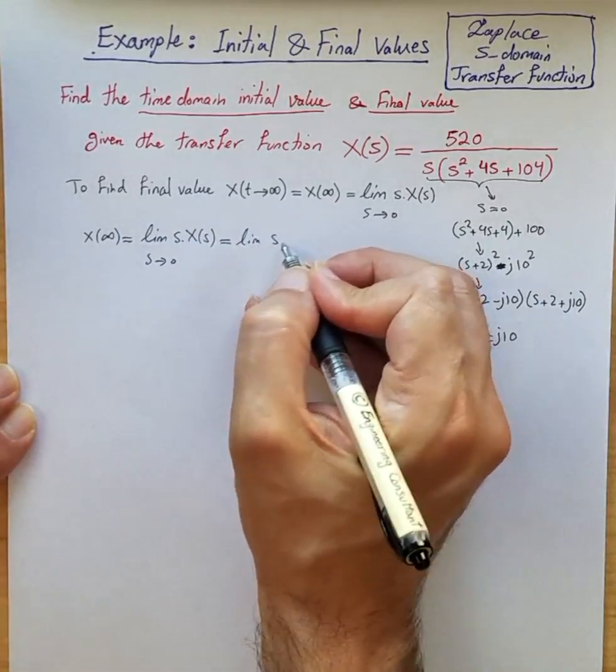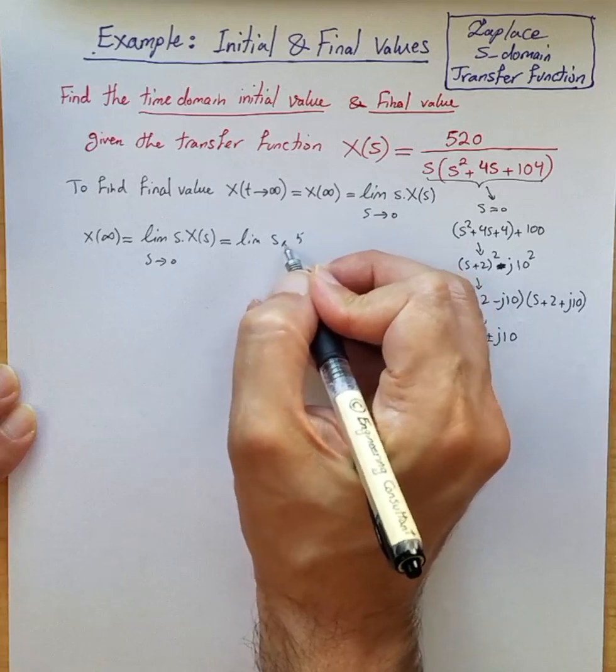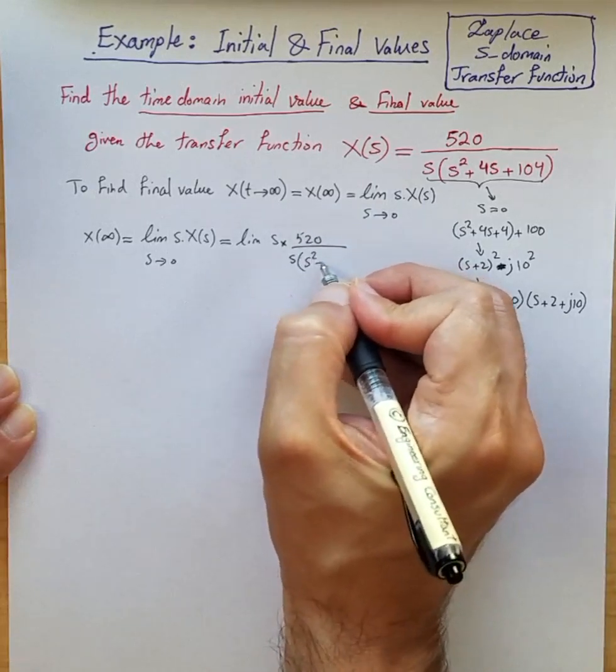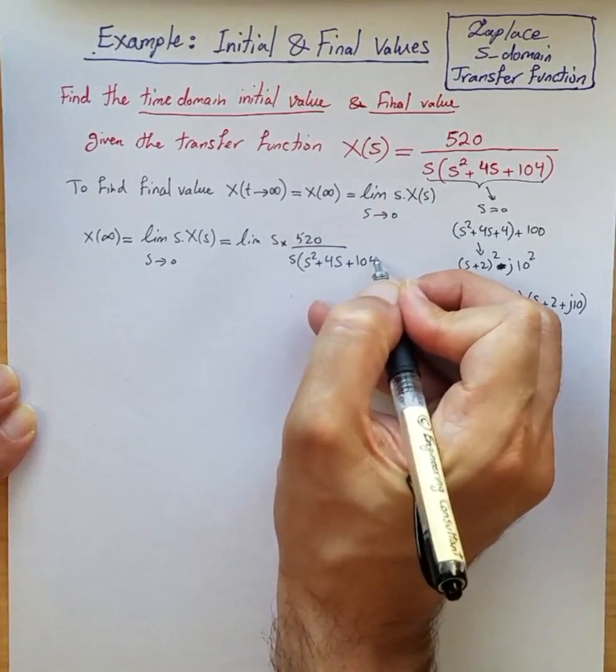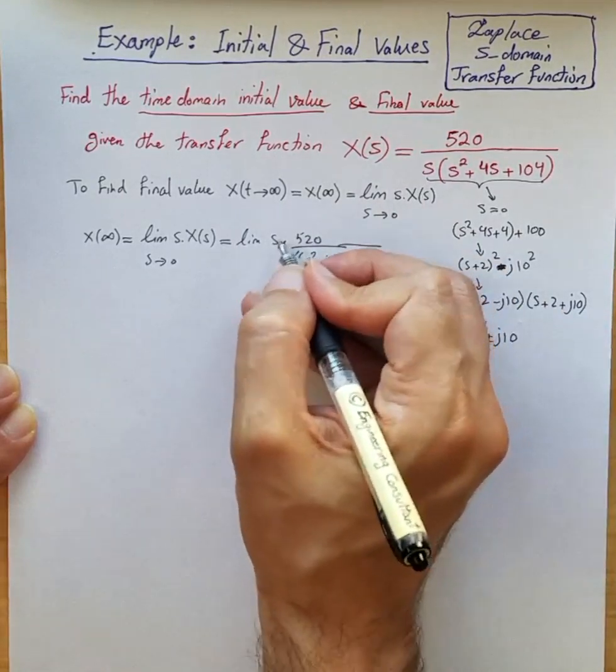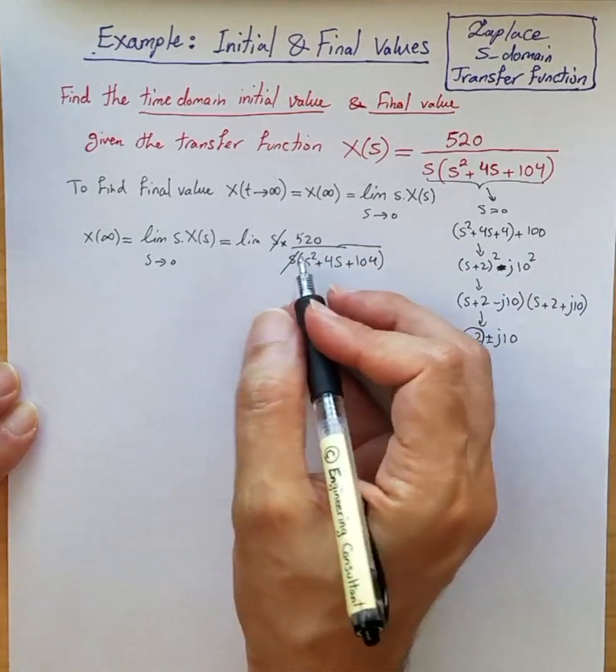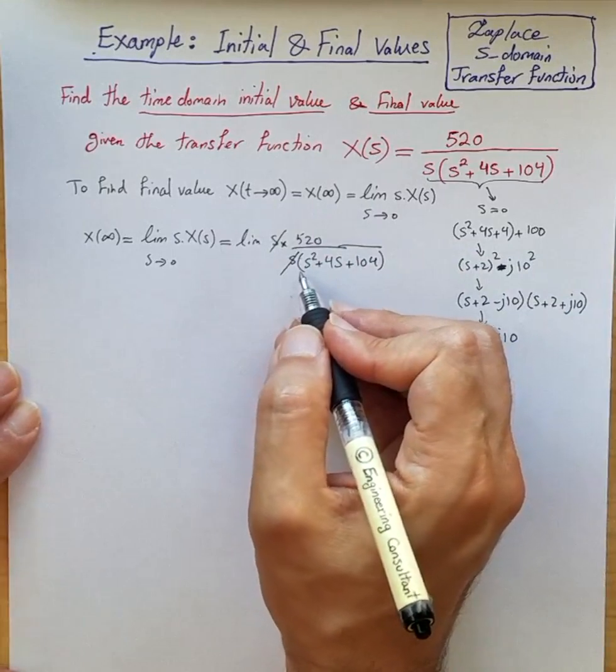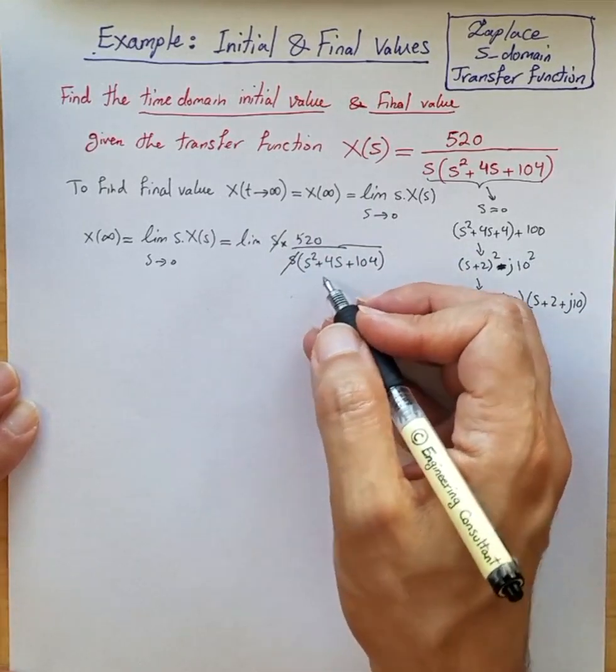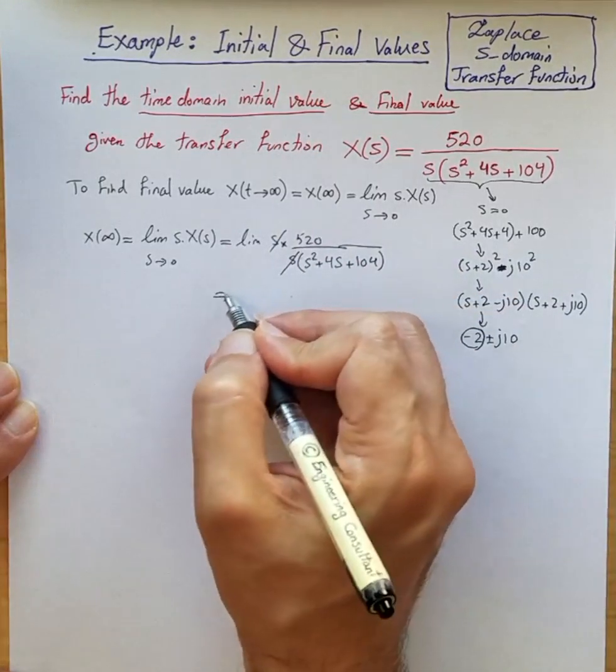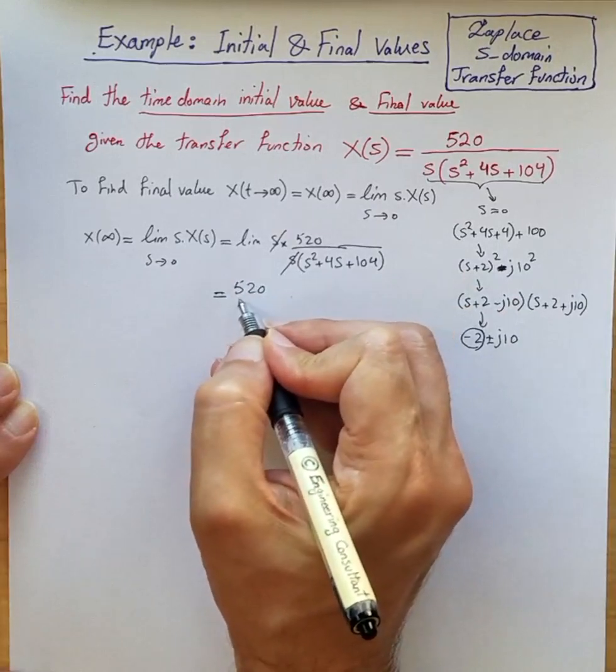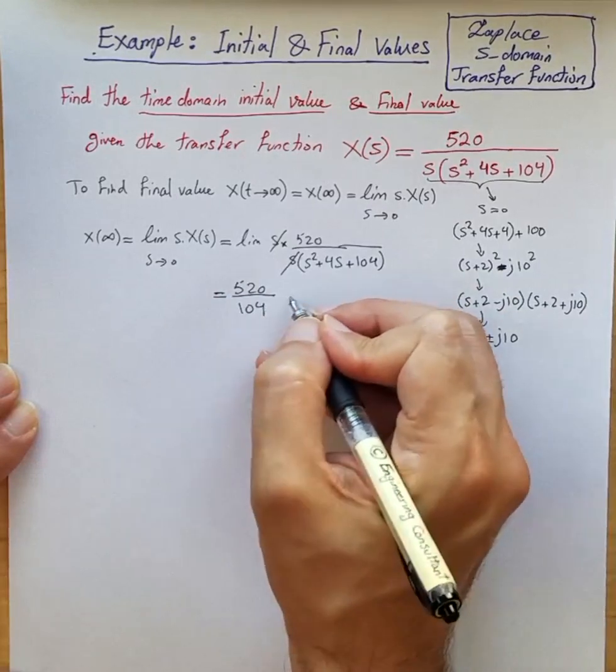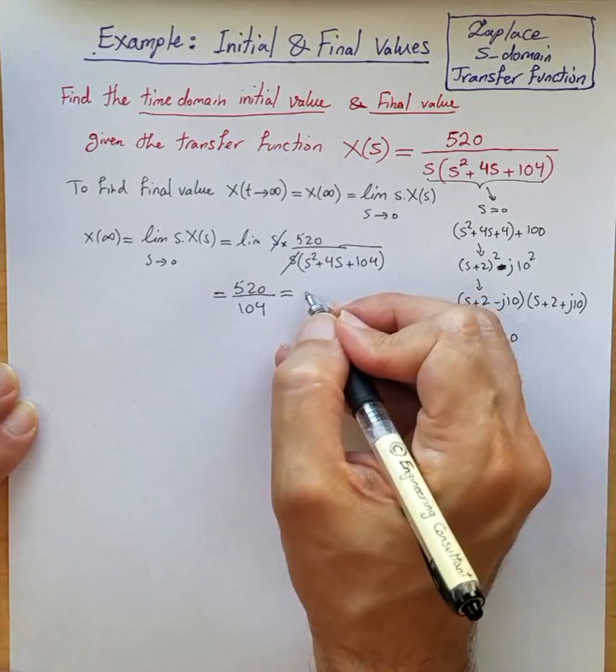It means it's the limit of s times 520 divided by s(s²+4s+104). These two s terms cancel out, and the limit of this function as s goes to 0 is obviously 520 over 104, which is just 5.